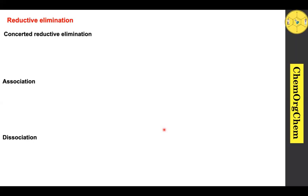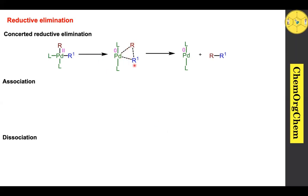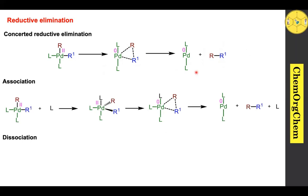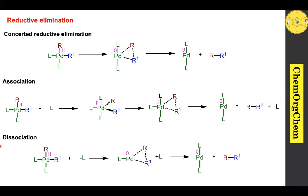Moving on to reductive elimination, which is the final step of the catalytic cycle. There are three types of mechanisms known: concerted reductive elimination, associative, and dissociative. In concerted reductive elimination, bond formation and bond breaking take place simultaneously to produce the carbon-carbon coupling product. In the associative mechanism, one ligand coordinates with palladium to produce a new intermediate, bringing the R and R1 groups closer to produce the product. In the dissociative mechanism, one ligand dissociates from the palladium center, followed by reductive elimination. From a stereochemistry standpoint, reductive elimination always takes place with retention of stereochemistry.